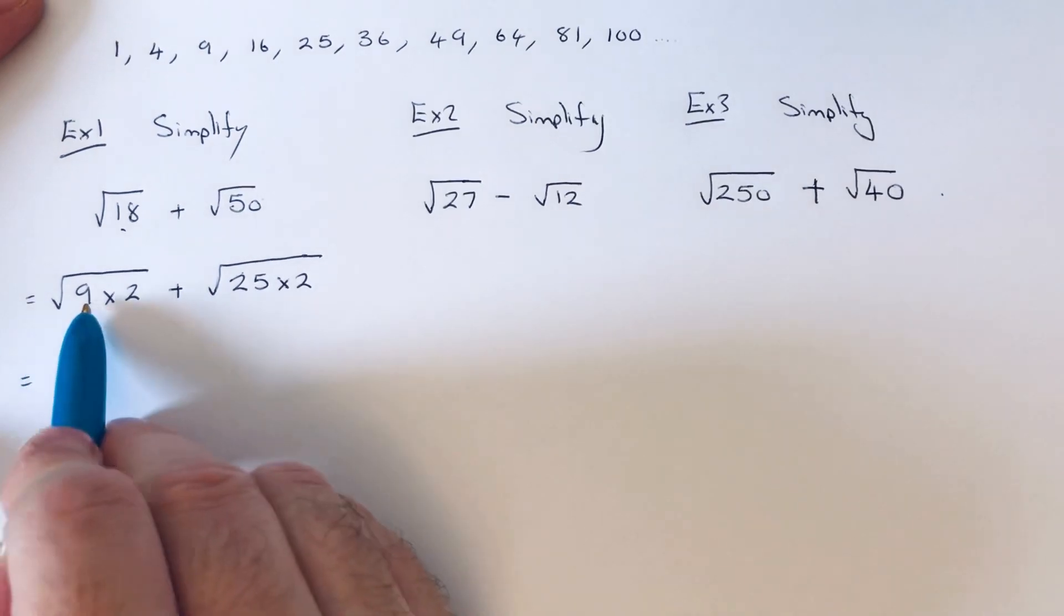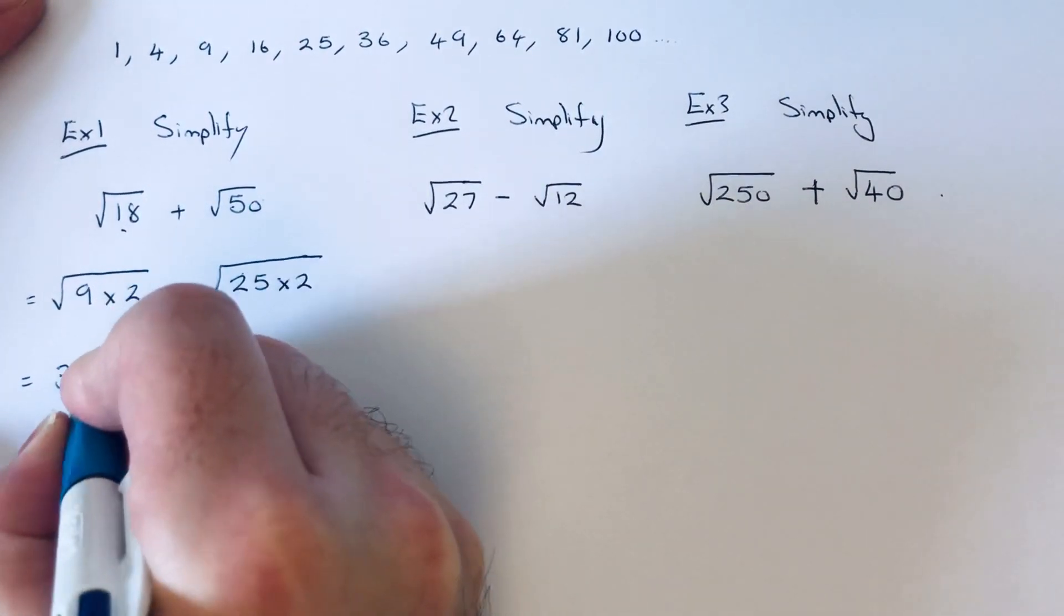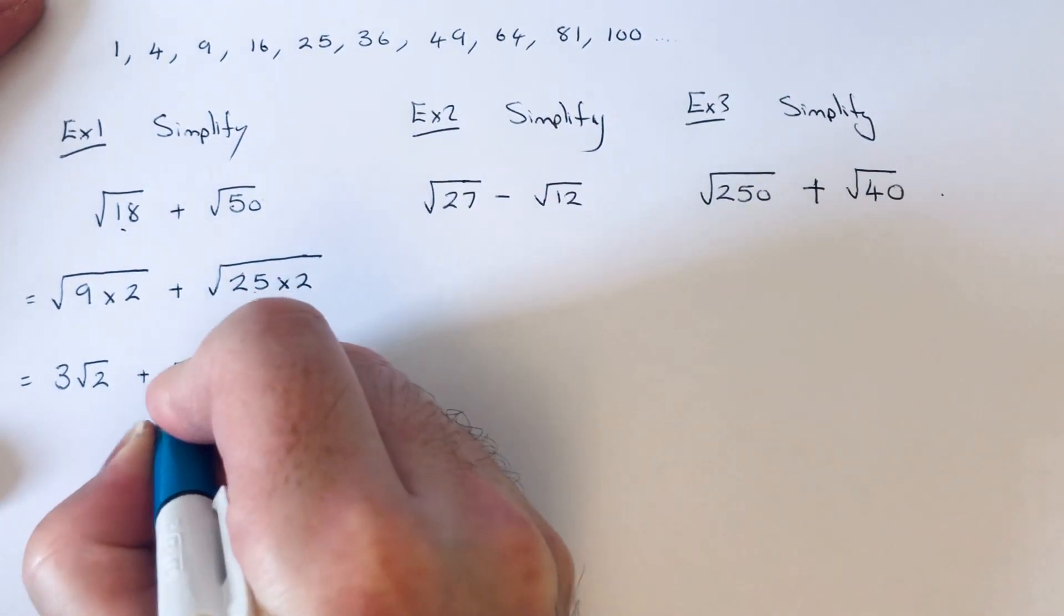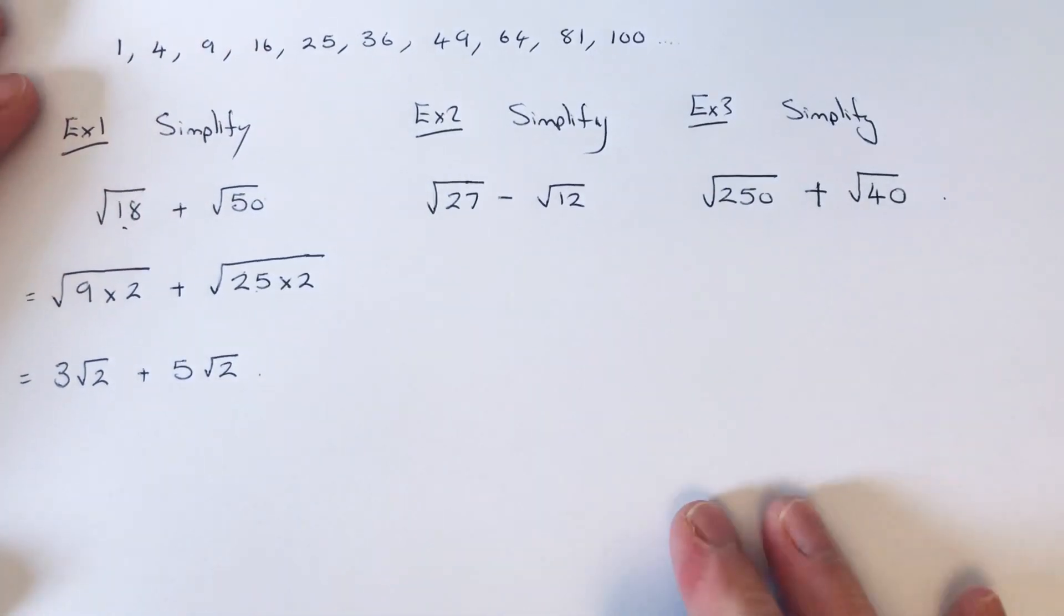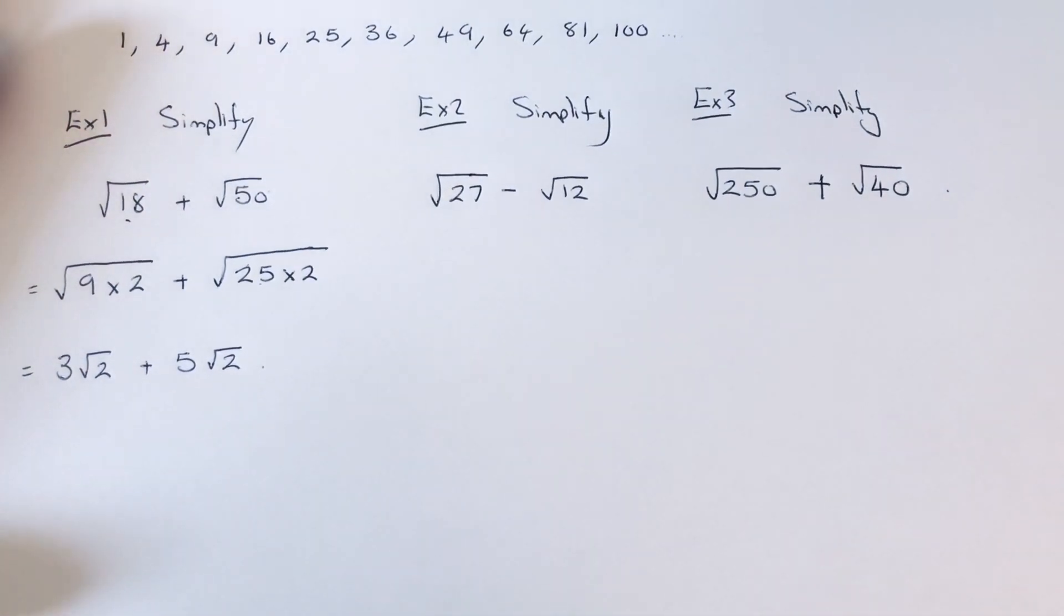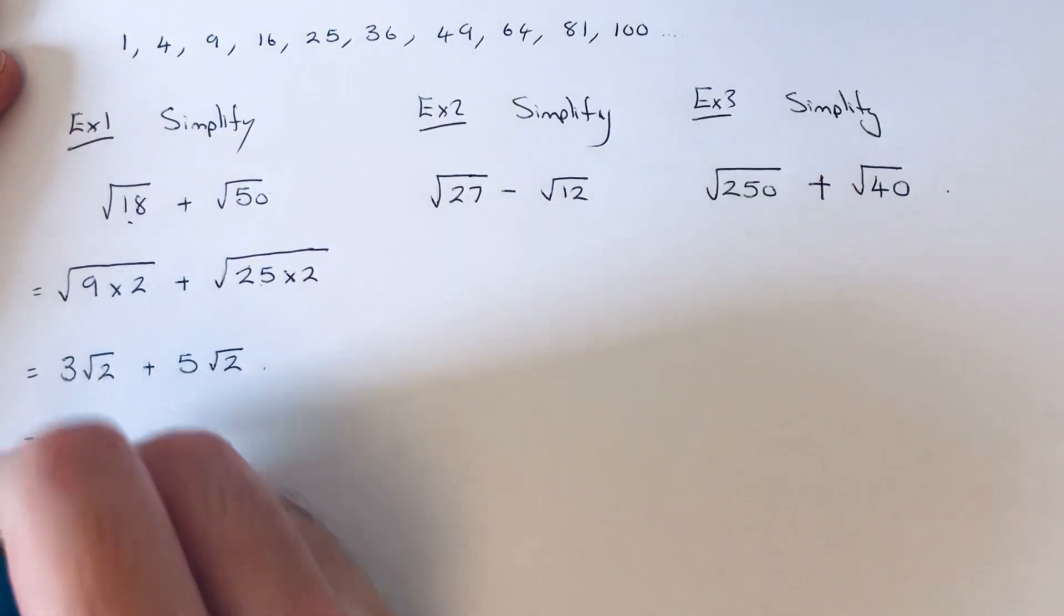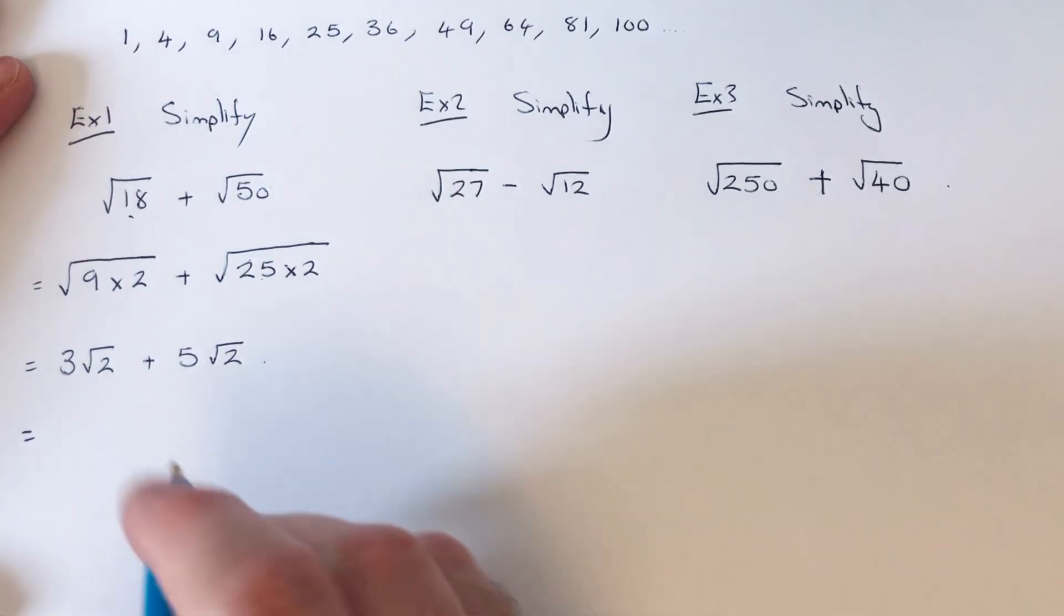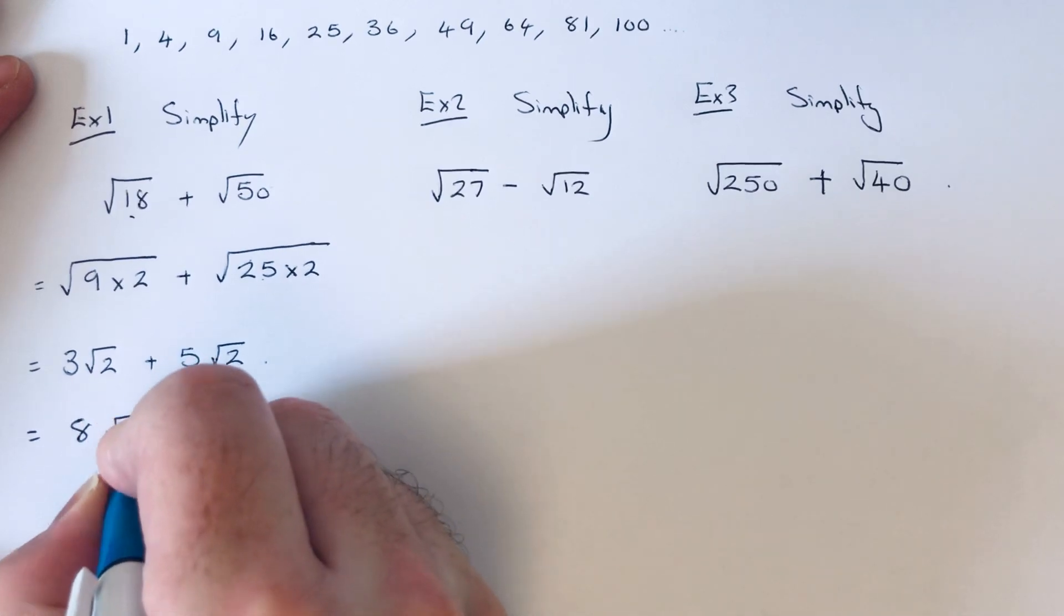So we can now square root 9 which is 3 but we can't square root the 2. We can square root the 25 which is 5 but we can't square root the 2. So as you can see we've simplified the thirds. So the numbers underneath the thirds are the same. So we can now add these together. So 3 root 2 add 5 root 2 gives an answer of 8 root 2.